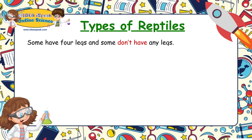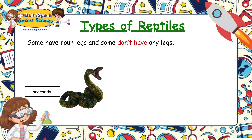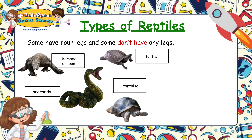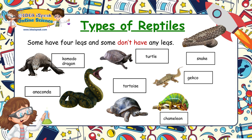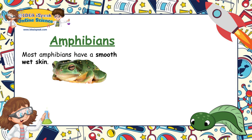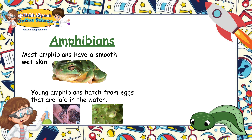Examples of reptiles: the anaconda, the Komodo dragon, the turtle, the tortoise, the chameleon, the gecko, the snake, and the lizard. Amphibians: most amphibians have a smooth, wet skin. Young amphibians hatch from eggs that are laid in the water.